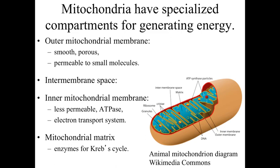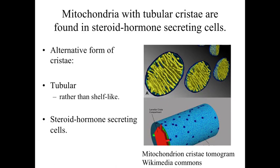At the innermost portion, in the matrix inside the inner mitochondrial membrane, is where the enzymes for the Krebs cycle — the TCA portion of cellular respiration — are found, essentially squeezing out as much energy as possible. There is also a variation: mitochondria with tubular cristae, instead of the traditional shelf-like cristae, are prevalent within steroid hormone-secreting cells and are involved with the formation of steroid hormones.